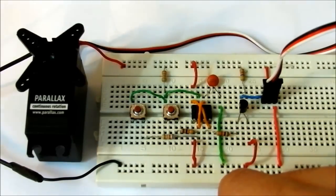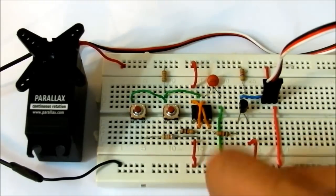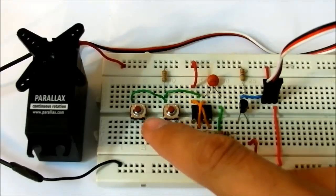To see if the servo works in anti-clockwise direction too, we use this push switch connected to the 68K resistor.